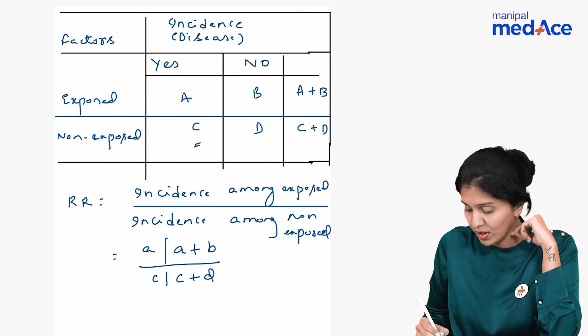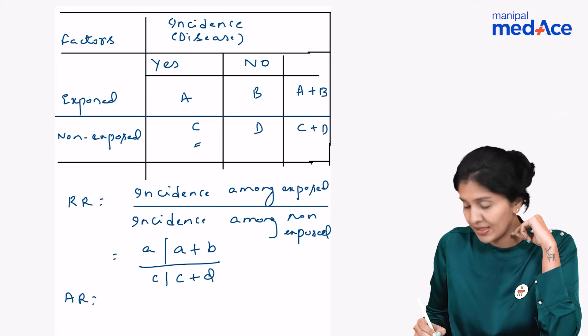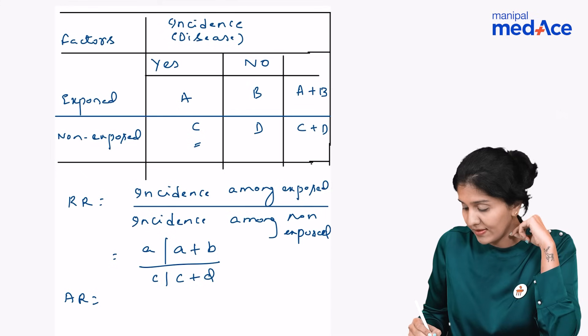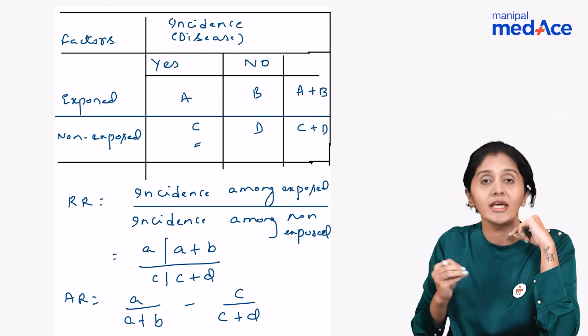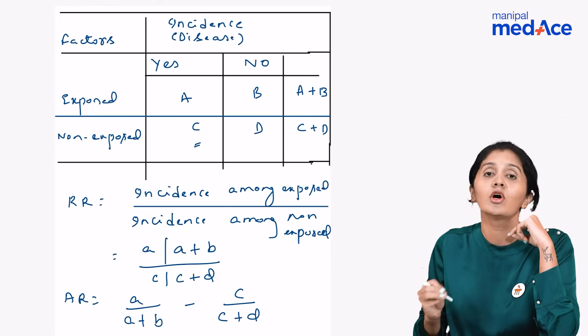Moving on to the formula for attributable risk. This is given by the formula a divided by a plus b minus c divided by c plus d. That is incidence among exposed minus incidence among non-exposed.